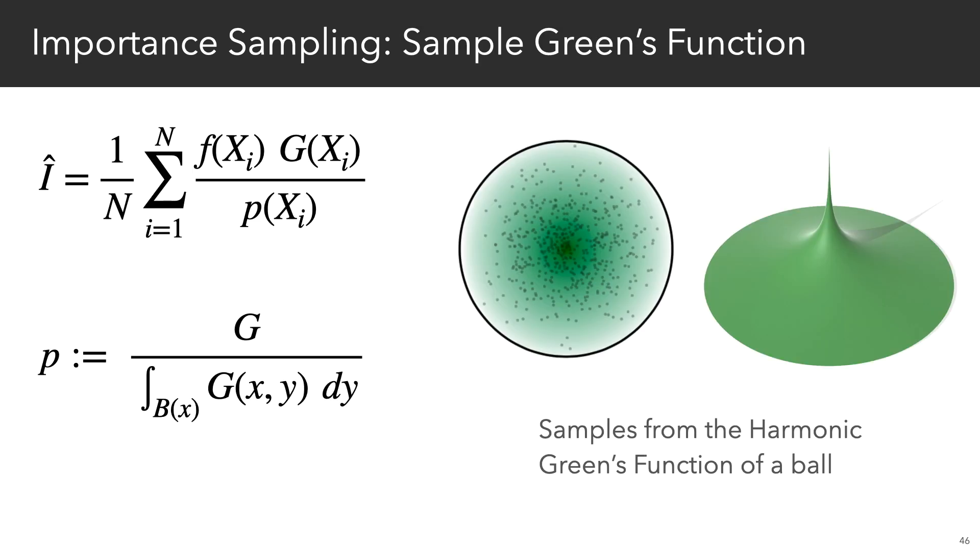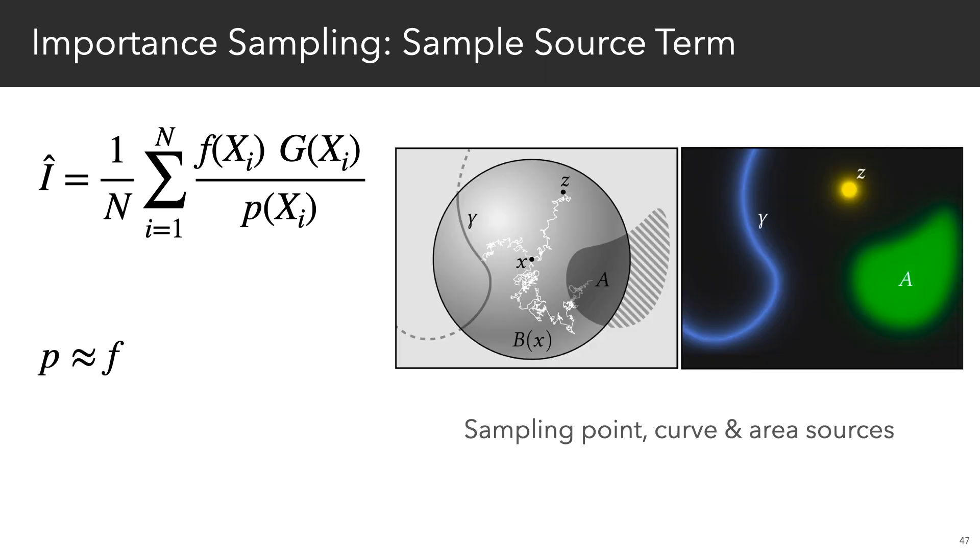Actually, it's a good default strategy for variance reduction to just draw samples from the normalized greens function of the ball. But in cases when the source terms have high frequencies or are defined just on a subset of the domain, then they can be sampled directly as well. The key point to stress here is that we were only able to get contributions from the point and curve sources in this example because we important sample them.